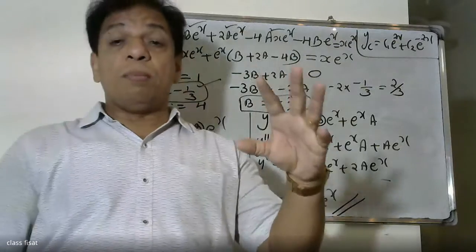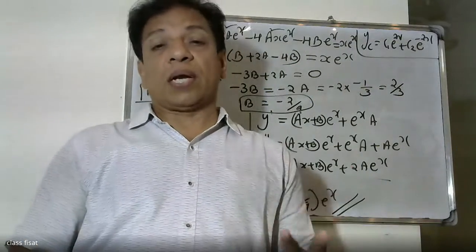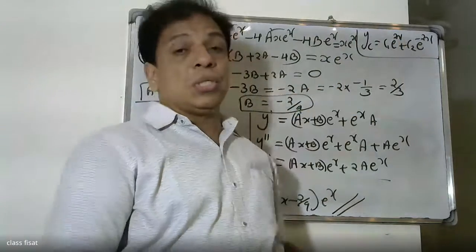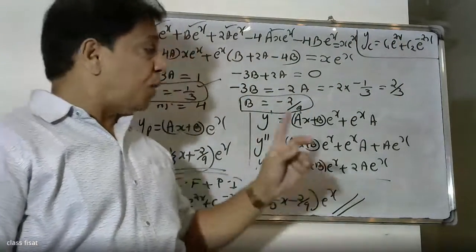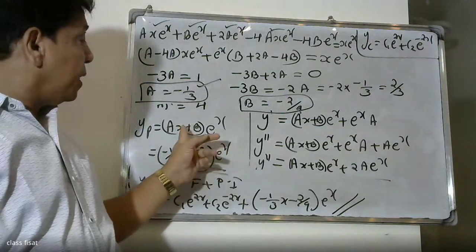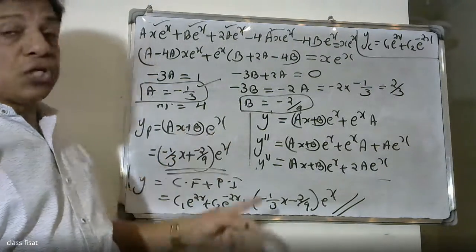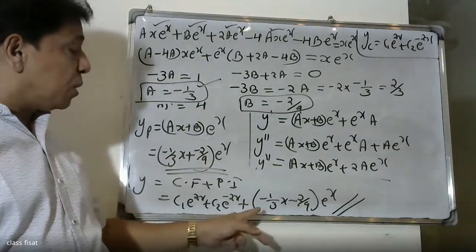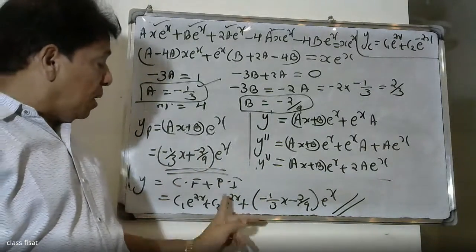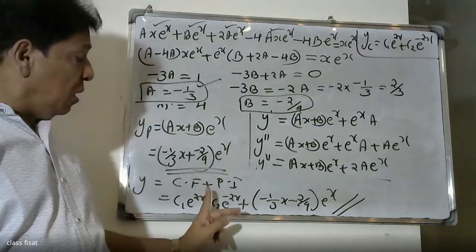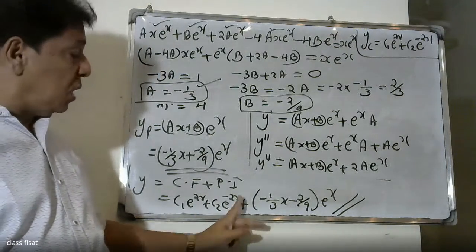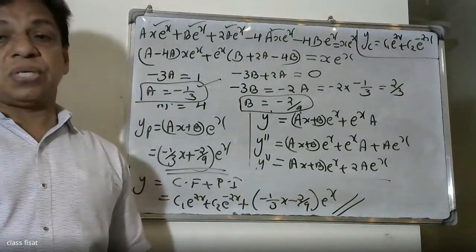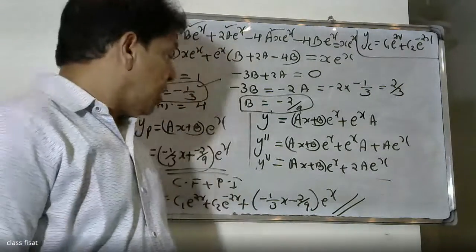The complementary function is c1 into e raised to 2x plus c2 into e raised to minus 2x. Adding the particular integral, the final solution is y equals c1 into e raised to 2x plus c2 into e raised to minus 2x plus minus 1 by 3 x minus 2 by 9 into e raised to x. That is the final answer.